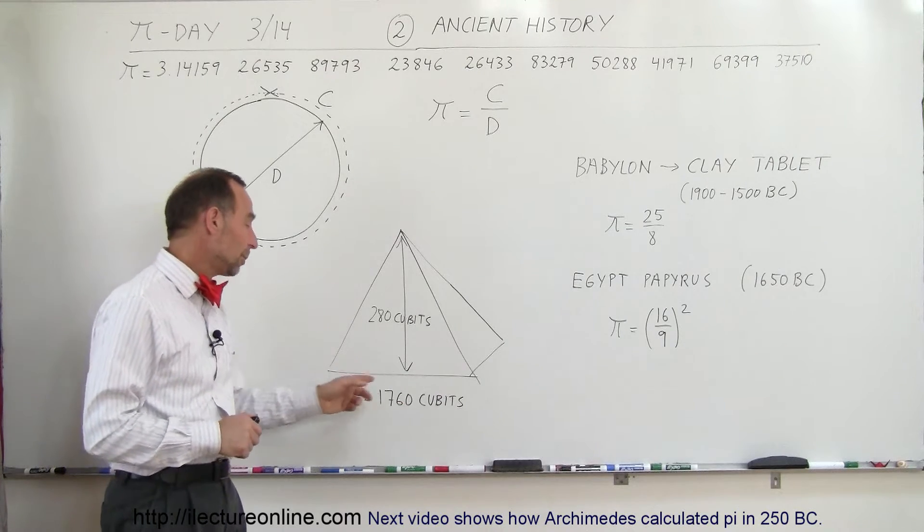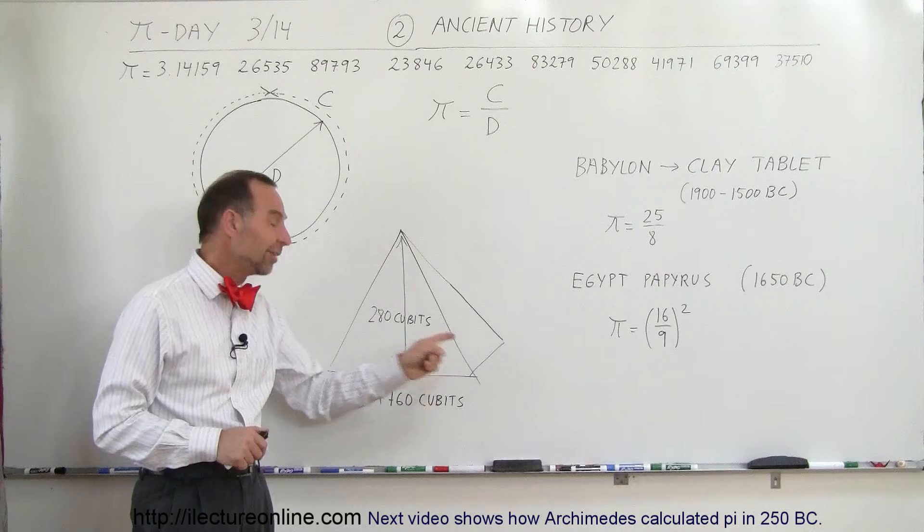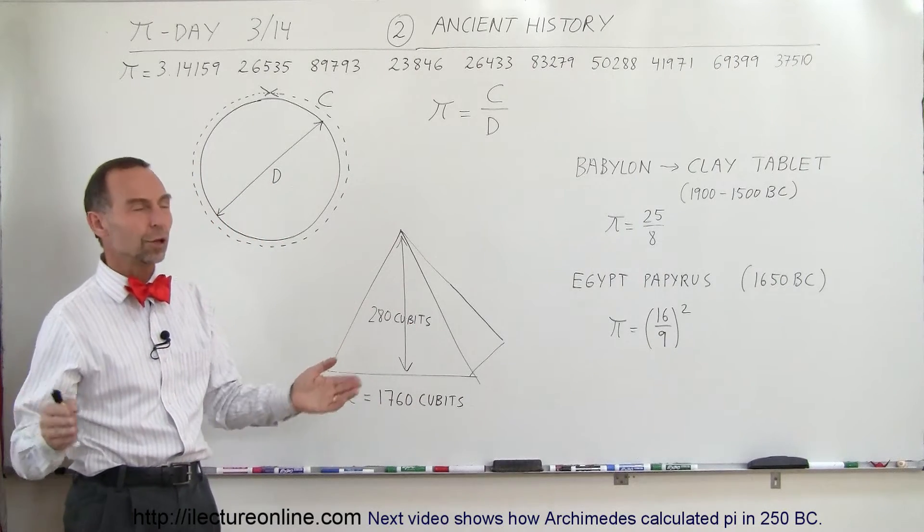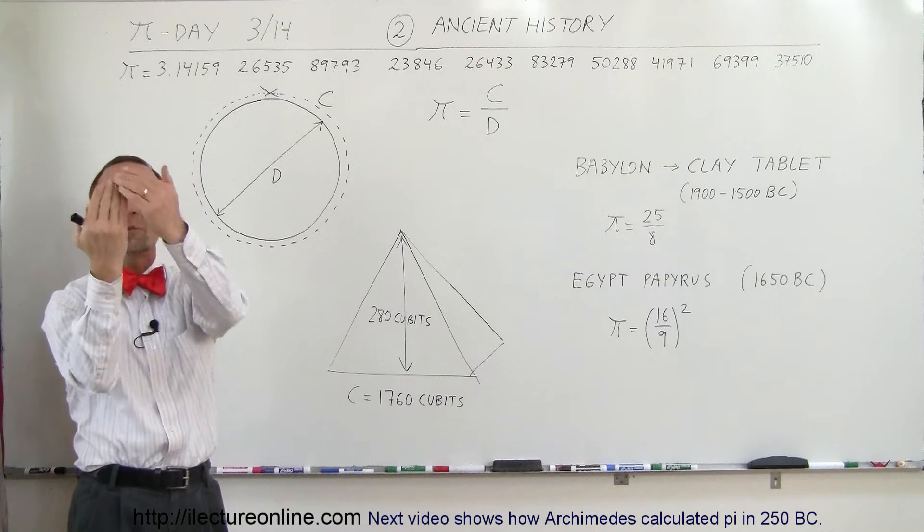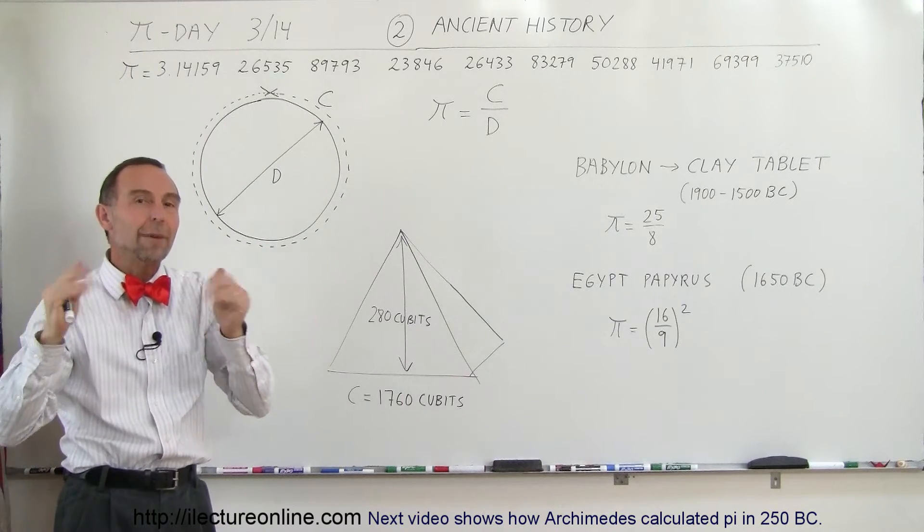The pyramids—one of the pyramids was built with a circumference of 1760 cubits. Now what's a cubit? A cubit was typically a distance from the tip of your middle finger down to your elbow. If you measure that distance, that's roughly about a cubit.